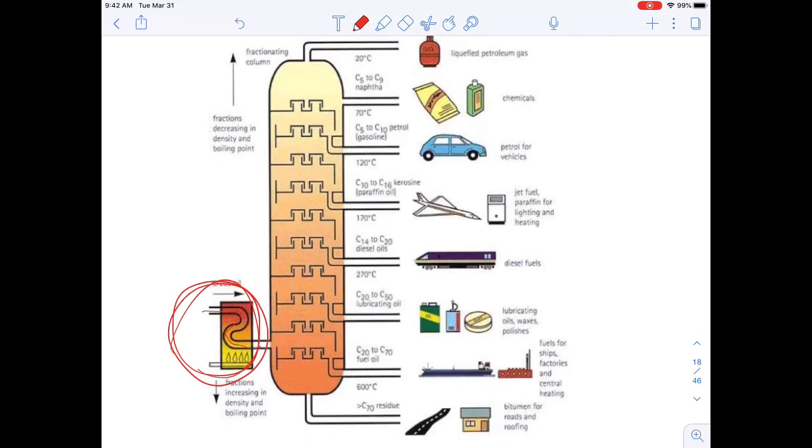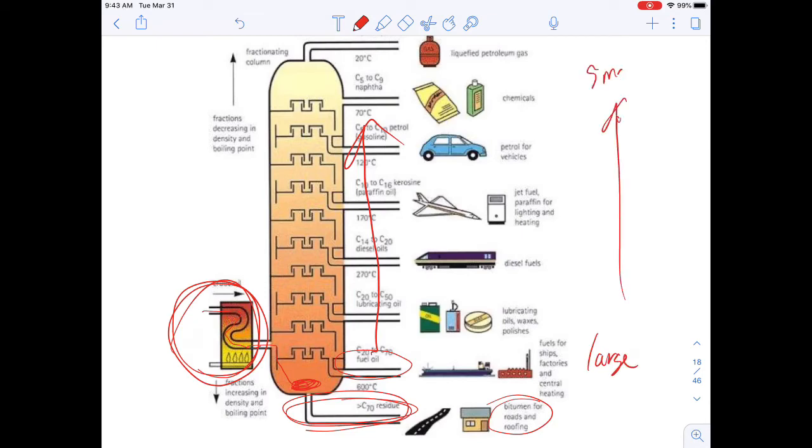Some of the crude will never actually boil when it comes here, and so it remains a liquid and it's collected at the bottom. Very large hydrocarbons that have lots of London dispersion force are collected as a liquid, and those things will be used for like bitumen for roads, surfacing, and roofing. It's basically asphalt. These very large molecules don't actually get hot enough to become gaseous. As you go up the tower, it goes from large molecules to small molecules. They're cooled all the way down, and when they cool they become a liquid and they collect the liquid off at the different points in the tower. That's called a fraction.